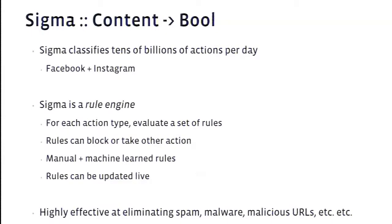A rule can do more than just return yes or no — it can block or take other actions. If we detect a user's credentials have been compromised we can log them out and help them change their password. If we detect their computer is infected we can help them clean it up. Over time we collect data about good and bad content, feed it into a machine learning pipeline, and build a model of spam. So our rule database ends up being a mixture of manually written rules and machine-learned rules. Rules must be updatable live: if a new attack comes in we write a rule, get it into production quickly, and start catching spam. This system has been in production for many years and has been highly effective at eliminating spam, malware, and other malicious activity.